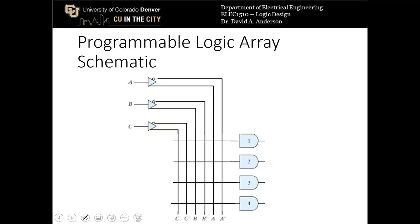So now we have access to all of our variables and all of the complements as columns, and those hit these horizontal lines that are input to AND gates. And this terminology is a little bit different than the terminology that we've seen before. Basically any time there's a connection formed between a column and a row, which we usually designate using an X, that means that that column line is one of the inputs to the AND gate.